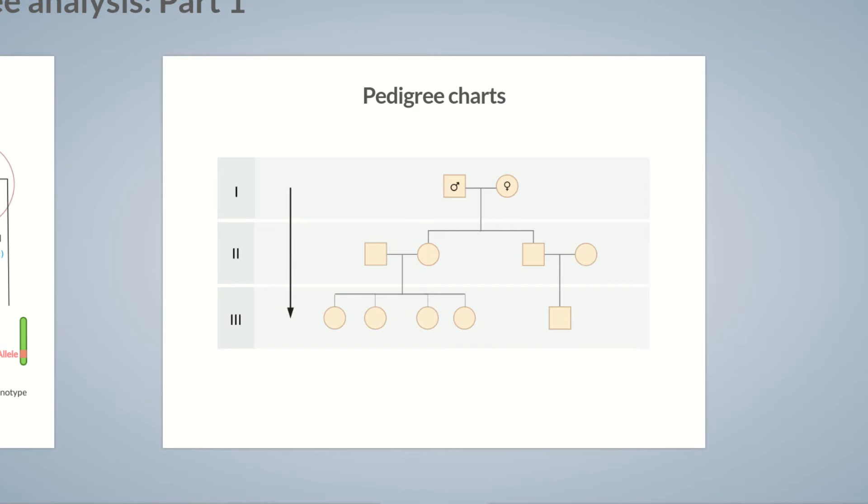If an individual is affected by the trait, their symbol is shaded with color. We'll be using the color purple for affected individuals, but there's no general rule on the use of a particular color. The pattern of inheritance can be easily traced in the pedigree chart.